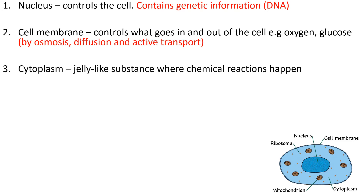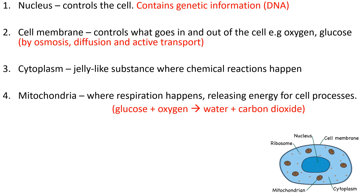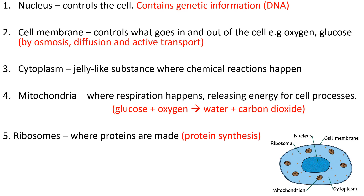The cytoplasm is a jelly-like substance where chemical reactions happen. Mitochondria is where respiration happens — it's where energy for cell processes is released. Just to recap that equation for aerobic respiration: it's glucose plus oxygen and it makes water and carbon dioxide. Ribosomes are our final one — it's where proteins are made, and the fancy way to say that is protein synthesis. Synthesis means put together, so it means it's putting proteins together.